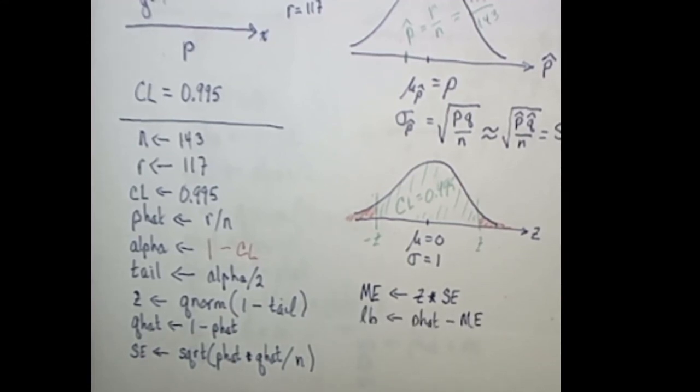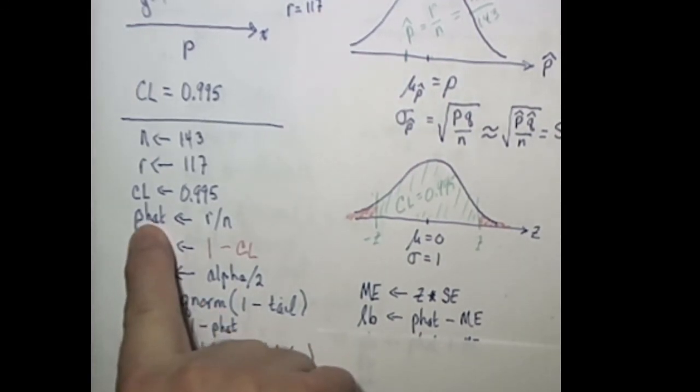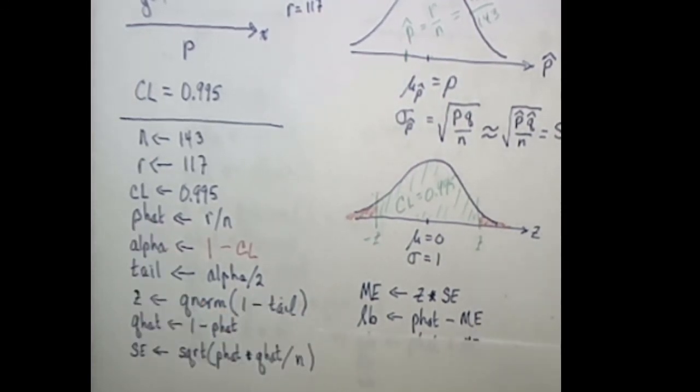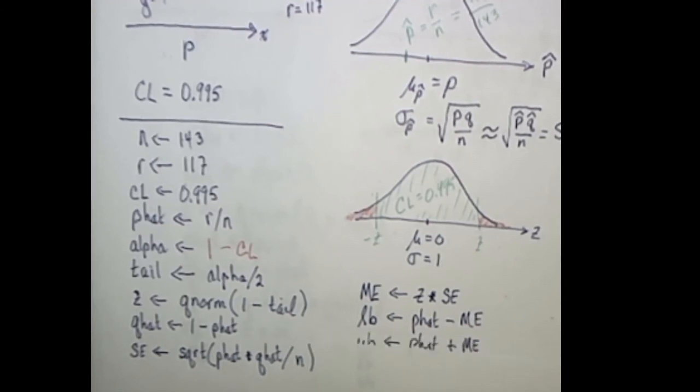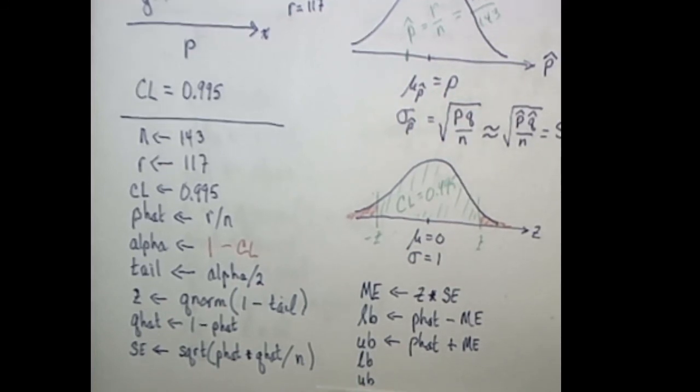Then to find the confidence interval, we'll need to find the lower bound, which is going to be found by taking the p hat minus that margin of error. The upper bound will be p hat plus that margin of error. And then we'll have, we need to ask R to print those out for the lower bound and the upper bound. And then we could write that result in an interval with the lower bound as a decimal number, comma the upper bound as that decimal number. Okay, that's the idea.